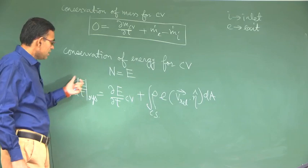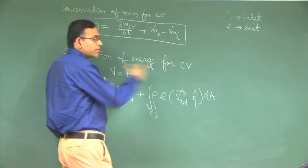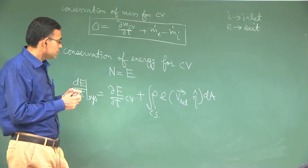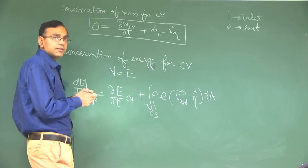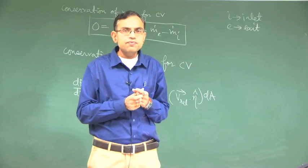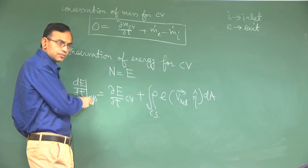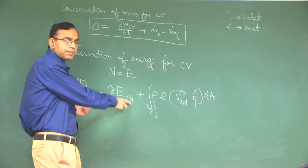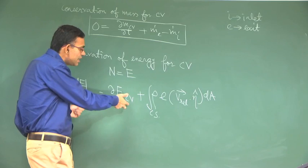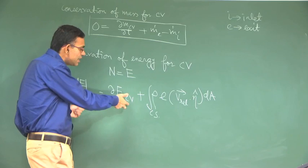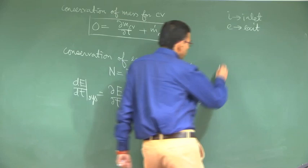Now let us consider the first law of thermodynamics for a control mass system. We have written it in this way because on one side you have knowledge of the first law of thermodynamics for a system, and that knowledge gives you the expression for the change in energy of the system. You do not have a direct expression for the change in energy of the control volume, so you are forced to write this in terms of the system, and here appears a correction term because of outflow and inflow.